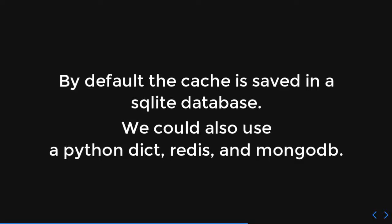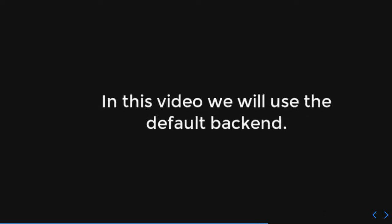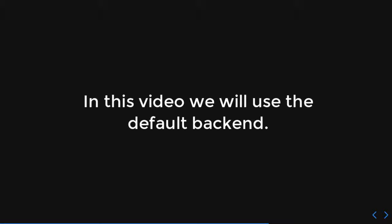What do I mean by internally? Well, by default the cache is saved in a SQLite database. It can also use a Python dictionary, Redis, and MongoDB. But we're just going to use the default, because who doesn't love SQLite — it's awesome.